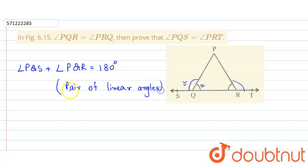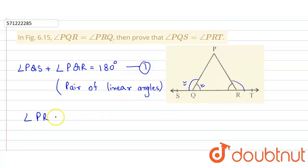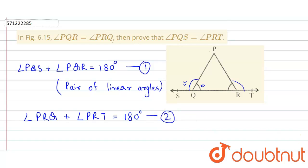Similarly, we consider this as equation number one. And similarly, angle PRQ plus angle PRT will also be equal to 180 degrees. So angle PRQ plus angle PRT is equal to 180 degrees, and we consider this as equation number two.